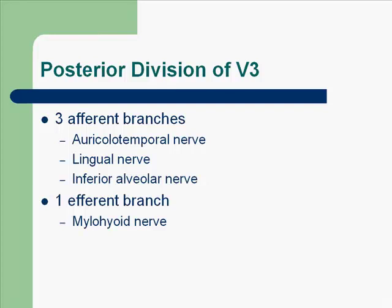The posterior division of V3 has three afferent branches: the auriculotemporal nerve, the lingual nerve, and the inferior alveolar nerve, also called the IA nerve. It also has one efferent motor branch, and that is the mylohyoid nerve.